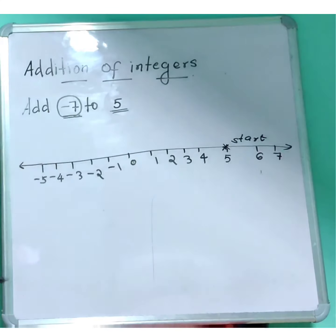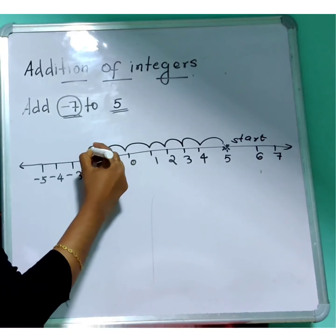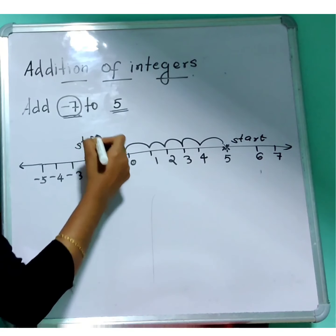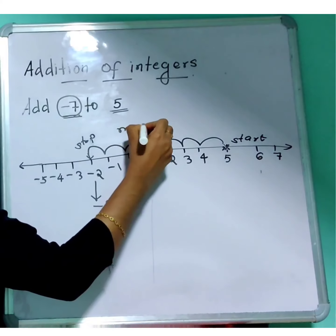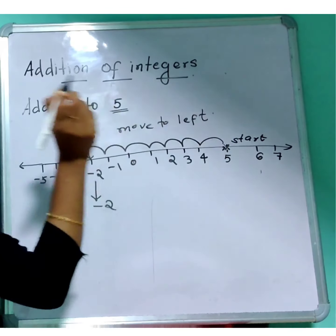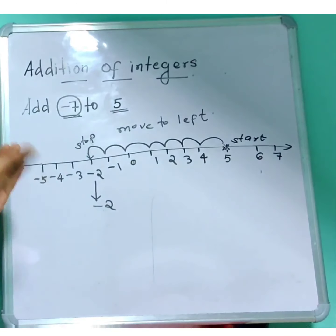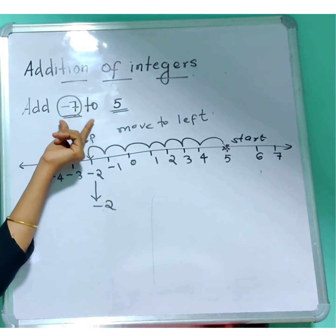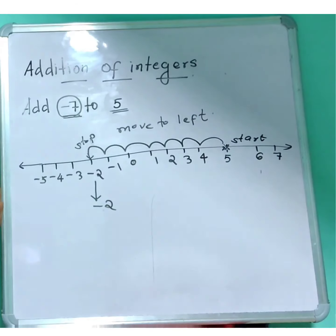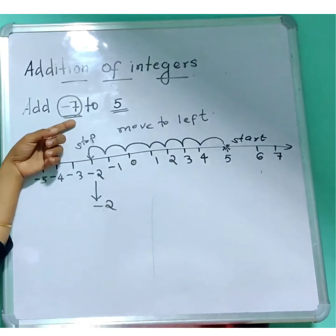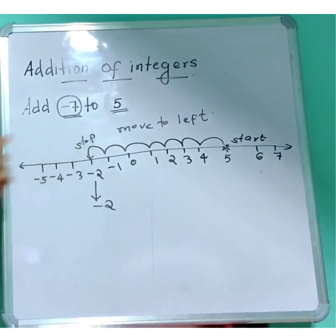We move to the left side by 7 places. Starting from 5: 1, 2, 3, 4, 5, 6, 7. Where have we reached? We have reached minus 2, so minus 2 is the answer. So whenever we are adding a positive integer, we move to the right side. And whenever we are adding a negative integer, we move to the left side.